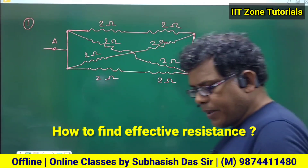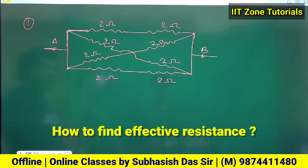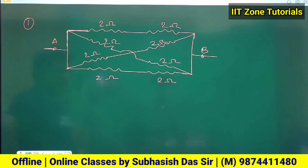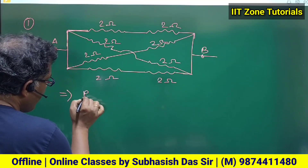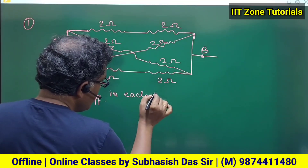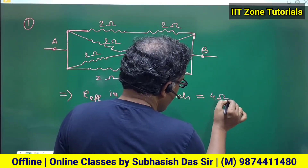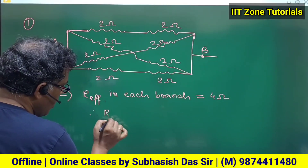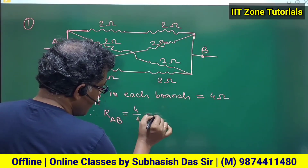In a series arrangement, there are four parallel branches, each branch being a series of two-ohm resistors, giving four ohms per branch. With four parallel branches, the effective resistance in each branch is four ohms. Therefore, the total effective resistance between A and B is four divided by four, which equals one ohm.